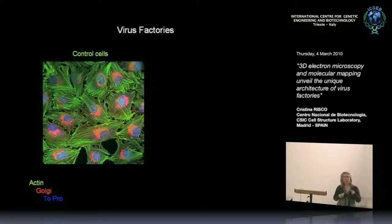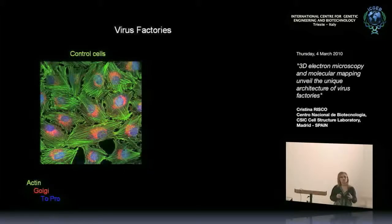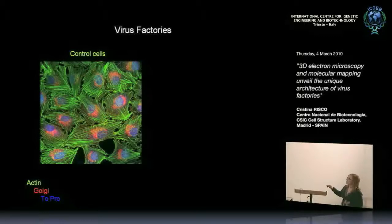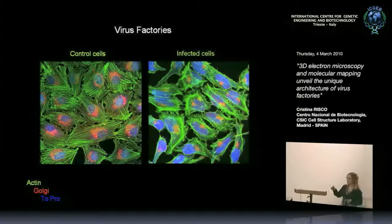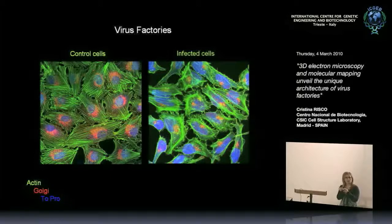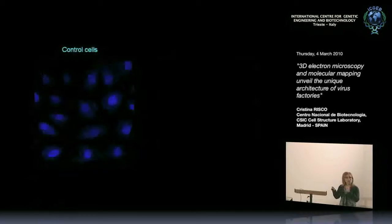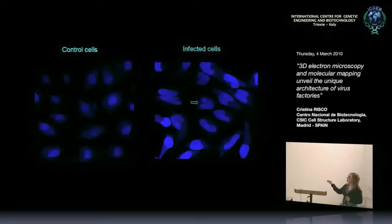How is a virus factory built? It involves major changes in the whole cell structure — not just local changes, but the whole ultrastructure of the cell is modified. In controlled BHK21 cells, nuclei are round, the Golgi in red surrounds the nuclei, and actin stress fibers are visible in green. Soon after infection, nuclei become elongated, actin is removed towards the cell periphery, and the Golgi changes completely to a round-shaped structure on one side of the nucleus, with a cavity where the factory is located.